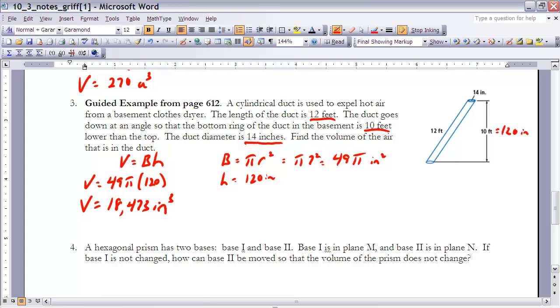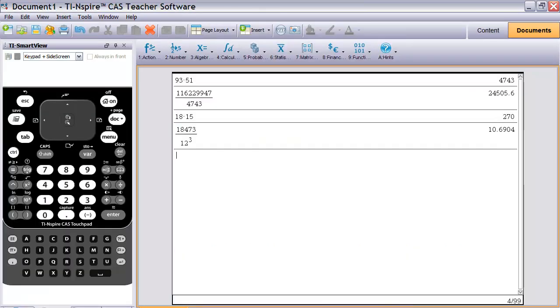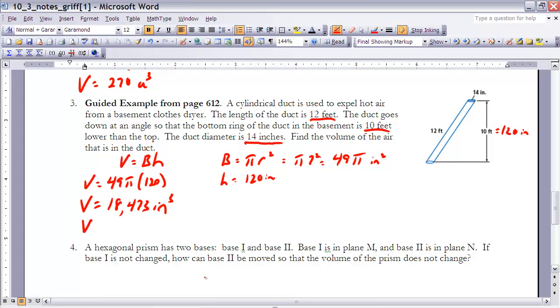Now, if I want that value in terms of cubic feet, I would need to divide this value by 12 squared. Remember, because we're, excuse me, by 12 cubed. So if I take 18,473 and divide it by 12 cubed, if I do that, you're going to notice that I get about 10.7. So it would be about 10.7 cubic feet. So if I wanted to express this in cubic feet, we would say it's about 10.7 cubic feet.